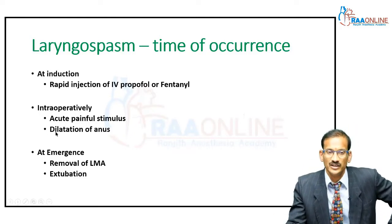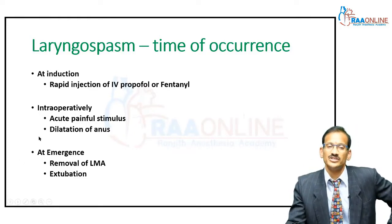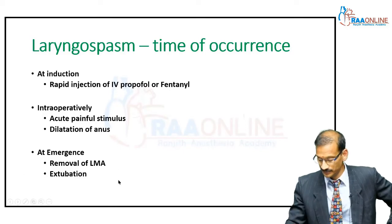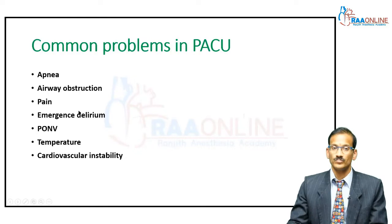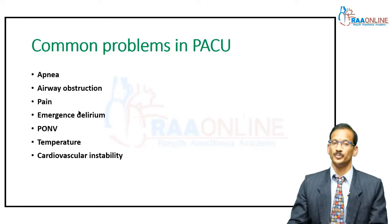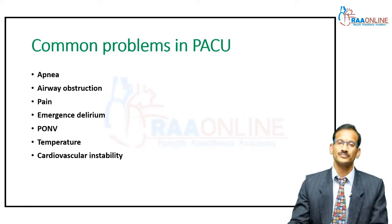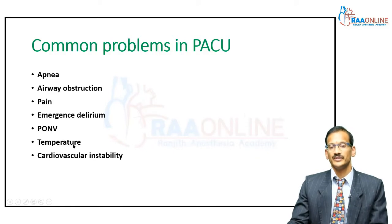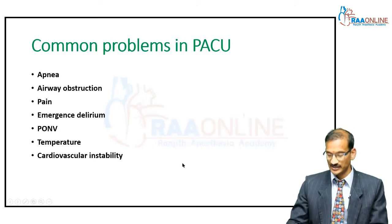The commonest time when laryngospasm occurs is at emergence — when you remove the LMA or when you extubate a child. As for problems in the post-anesthetic care unit (PACU): these include apnea, airway obstruction, pain, emergence delirium, nausea, vomiting, temperature disturbances, and hemodynamic disturbances.